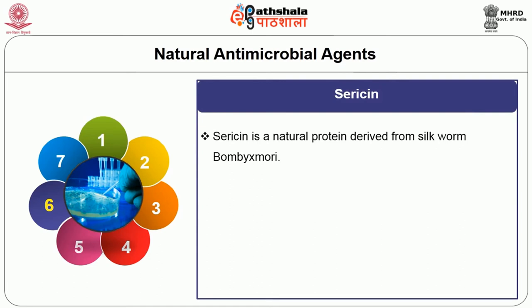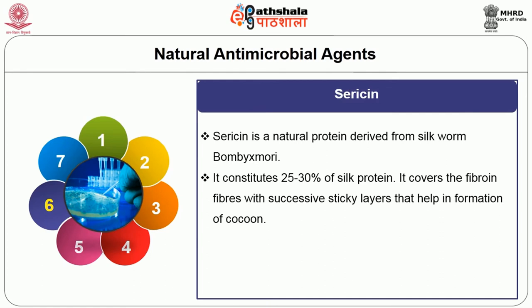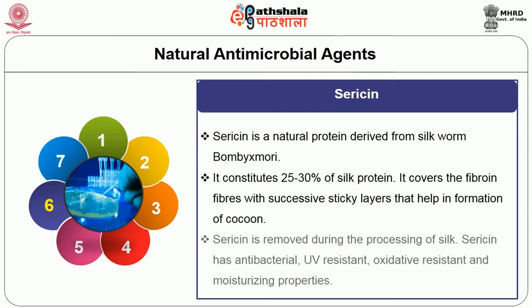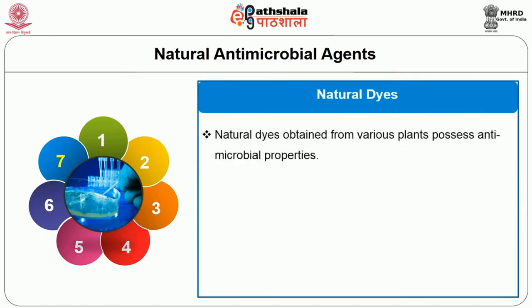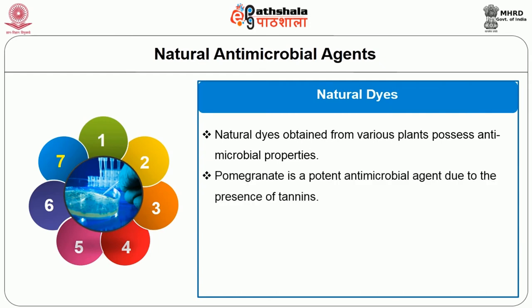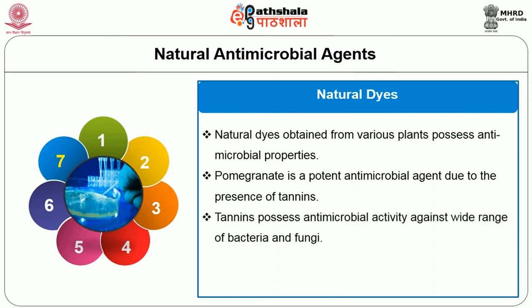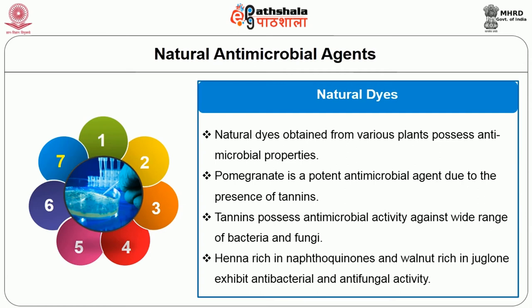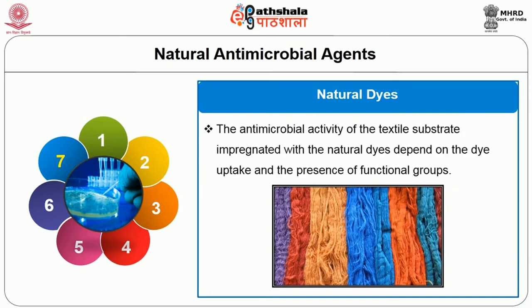Sericin is a natural protein derived from the silkworm Bombyx mori. It constitutes 25–30% of silk protein. It covers the fibroin fibers with successive sticky layers that help in formation of the cocoon. Sericin is removed during the processing of silk. Sericin has antibacterial, UV resistant, oxidative resistant and moisturizing properties. Natural dyes obtained from various plants also possess antimicrobial properties. Pomegranate is a potent antimicrobial agent due to the presence of tannins. Tannins possess antimicrobial activity against a wide range of bacteria and fungi. Henna, rich in naphthoquinones, and walnut, rich in juglone, exhibit antibacterial and antifungal activity. The antimicrobial activity of the textile substrate impregnated with natural dyes depends on the dye uptake and the presence of functional groups.